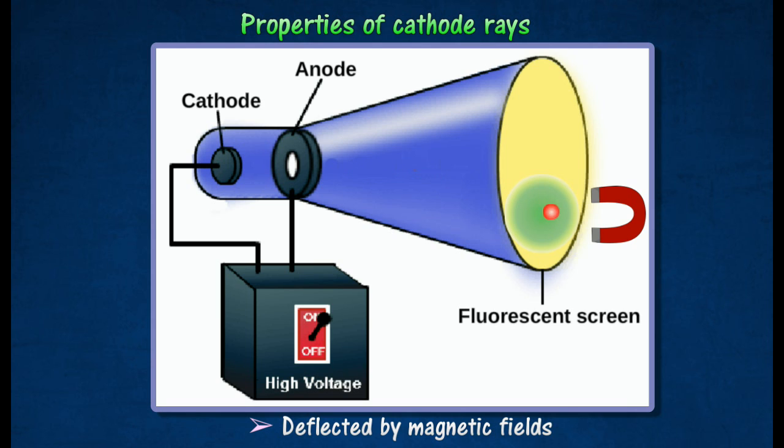If a magnet is placed near the instrument in the diagram, the shadow on the fluorescent screen will move.